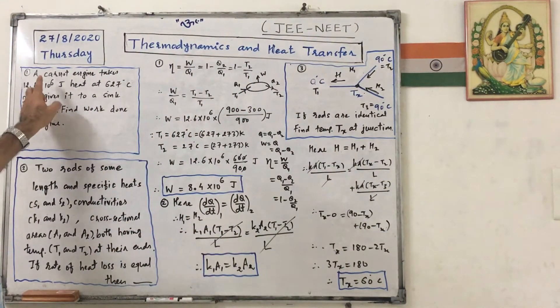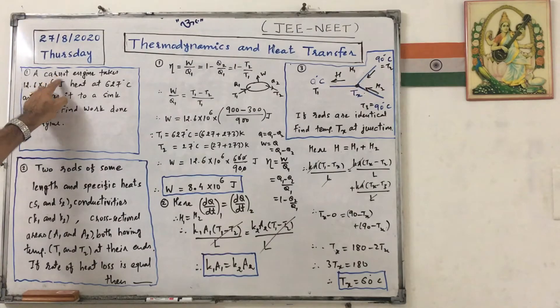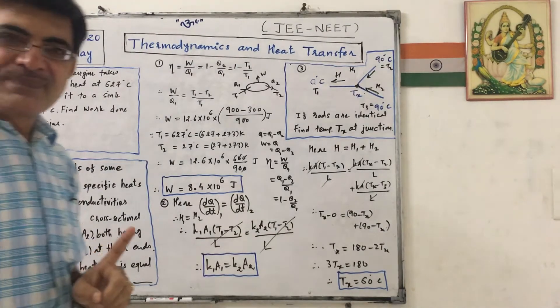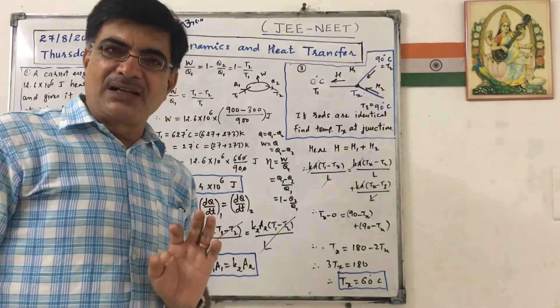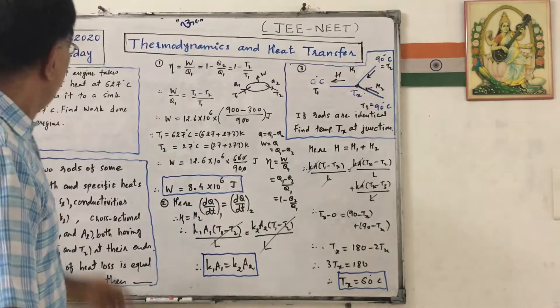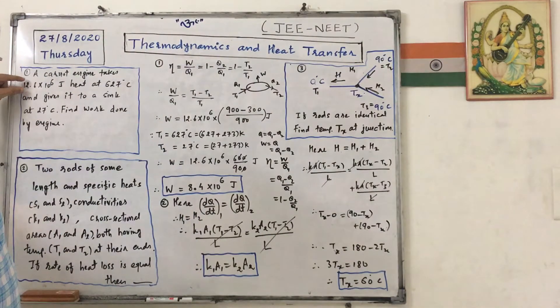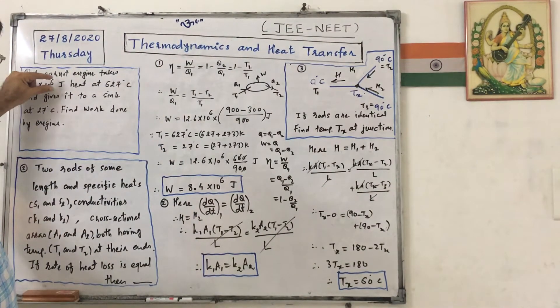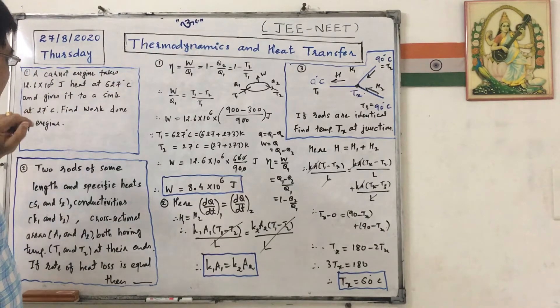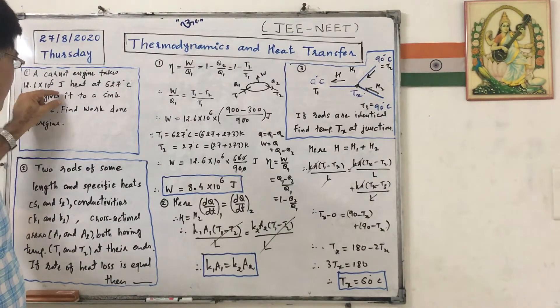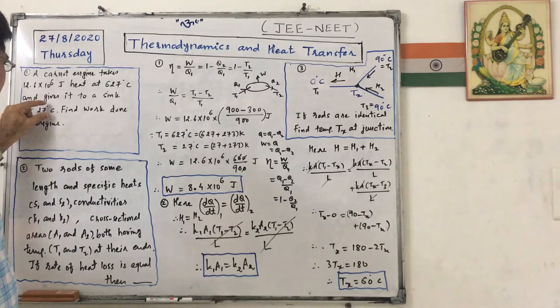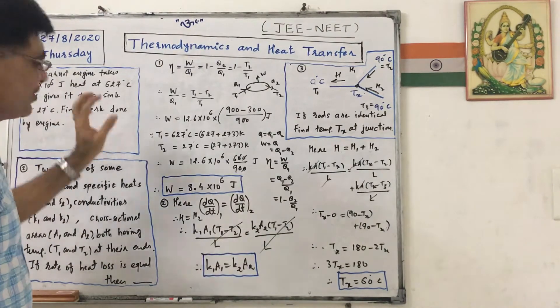The first problem: A Carnot engine - actually see the spelling is C-A-R-N-O-T, but the pronunciation is Carnot, T is silent. A Carnot engine takes 12.6 into 10 raised to 6 joules heat at 620 degrees Celsius and gives it to sink at 27 degrees Celsius. Find work done by engine.